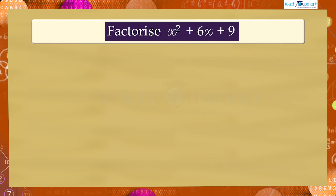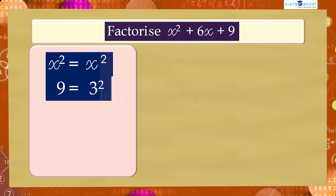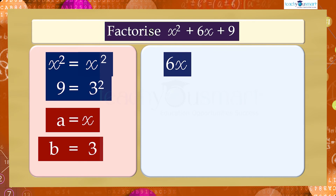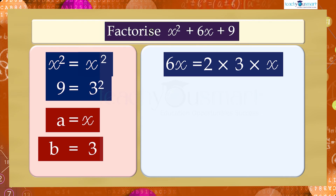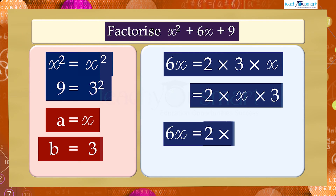We can write x² as x² and 9 as 3², that is a = x and b = 3. Then 6x can be written as: 6x = 2 × 3 × x = 2 × x × 3, which is equal to 2 × a × b.